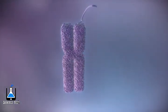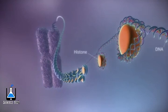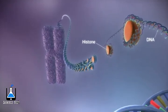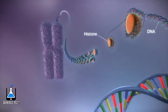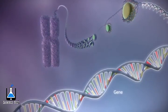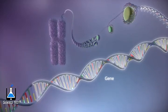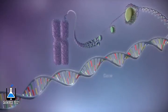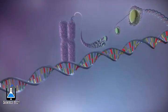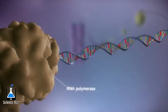Each chromosome contains a long strand of DNA tightly packaged around proteins called histones. Within the DNA are sections called genes. These genes contain the instructions for making proteins. When a gene is switched on, an enzyme called RNA polymerase attaches to the start of the gene.